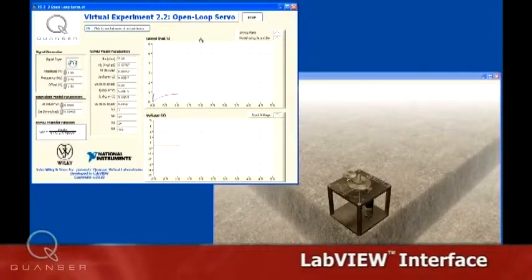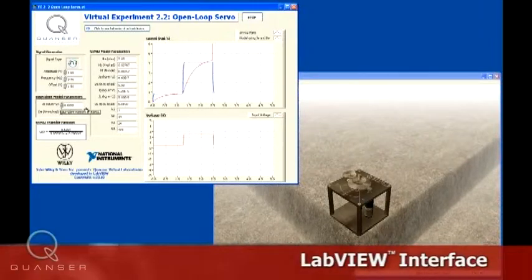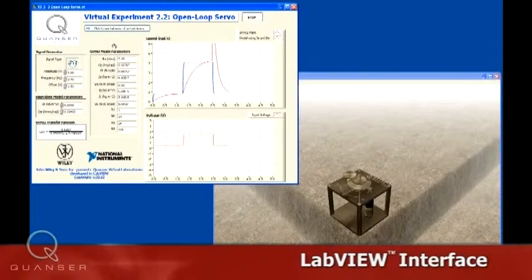The object is to find a model that represents the rotary servo system. This is achieved by applying a step voltage to the motor and measuring the corresponding speed using the control design software.